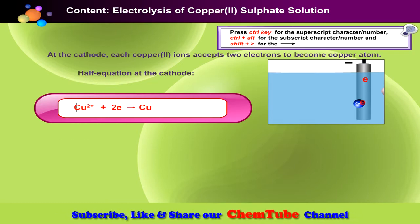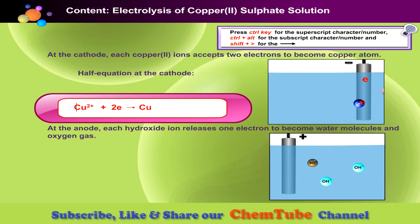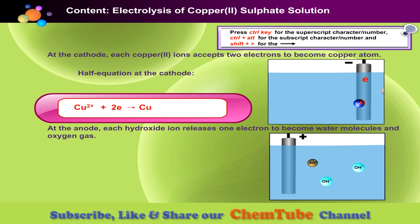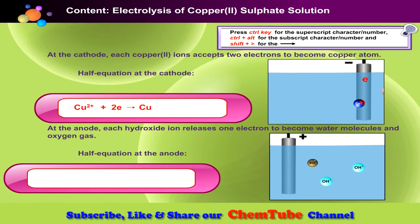At the anode, each hydroxide ion releases an electron to form water molecules and oxygen gas. Now, type in the half equation and press Enter to check your answer.